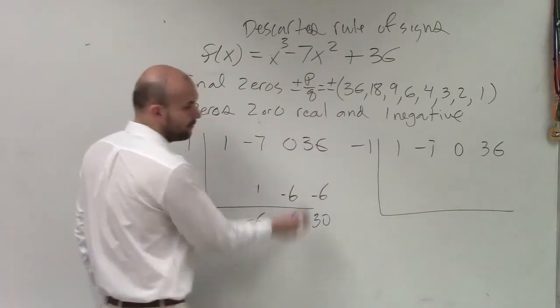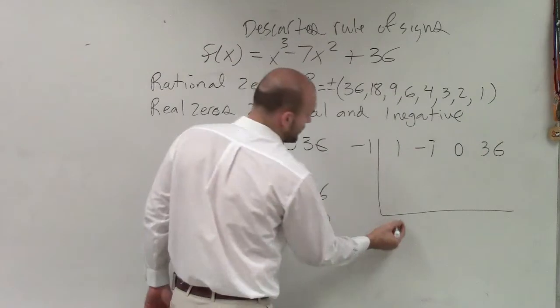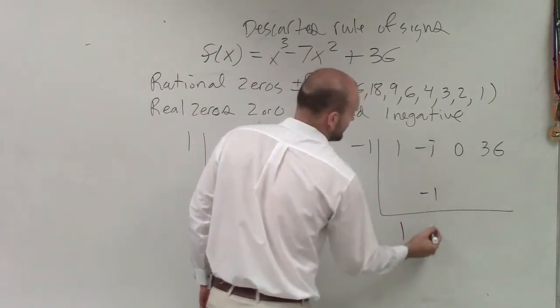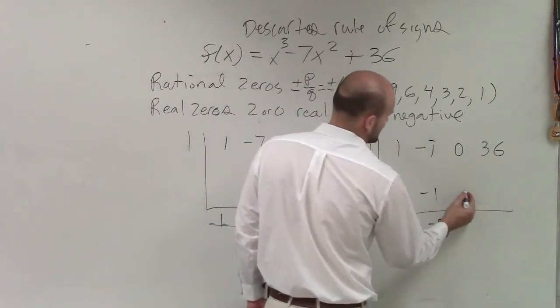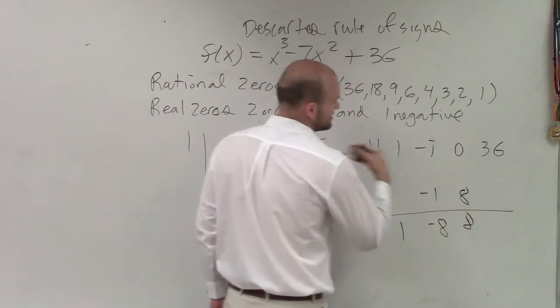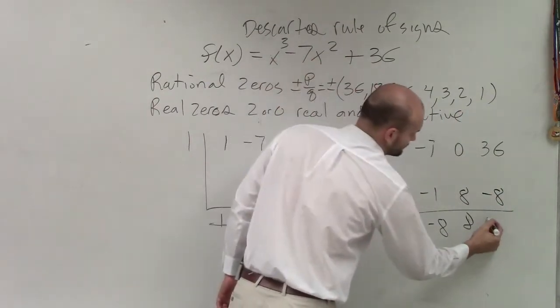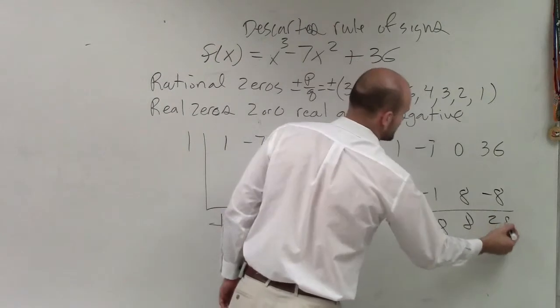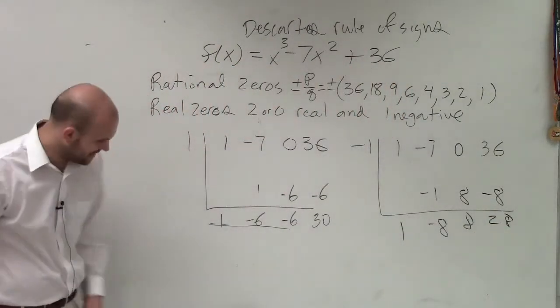So let's try negative 1. 1 didn't work, so let's go to negative 1. Bring down the 1. 1 times negative 1 is negative 1, negative 8. Negative 8 times 1 is positive 8, 8. 8 times negative 1 is negative 8. That's not going to work. 28. So therefore, they both have remainders.